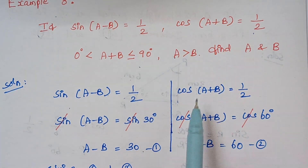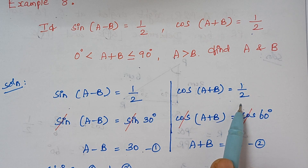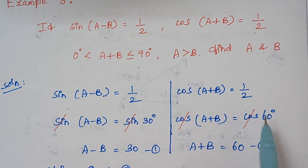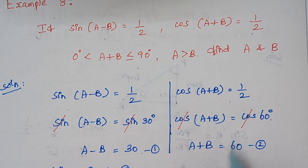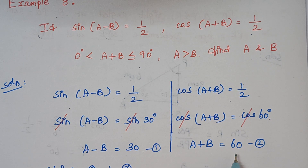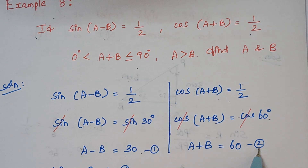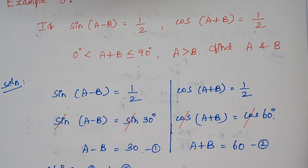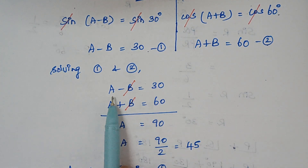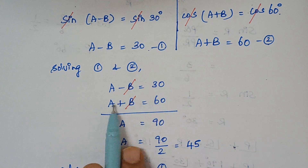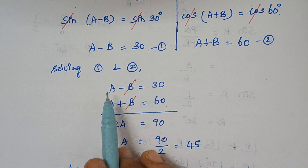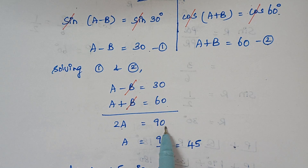Next, cos(A + B) = 1/2. From the table, cos 60° = 1/2. Replacing and cancelling cosines: A + B = 60. That is equation 2. Now we solve equations 1 and 2 by adding them: A − B = 30 and A + B = 60. The B terms cancel, giving 2A = 90.